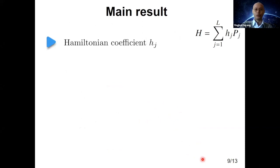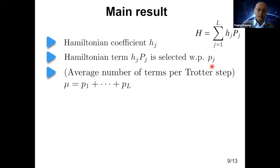The main result is an upper bound on the diamond norm, expressed in terms of these quantities, the Hamiltonian coefficients. Recall these Hamiltonian coefficients appear in this Hamiltonian decomposition. In general, these Pjs are just operators with a singular value set to one. Each term Pj is selected with probability Pj, and this probability is something that is preset. Because we have these probabilities, the expected number of terms per Trotter step would be just the sum of these probabilities, which we can set to be mu.